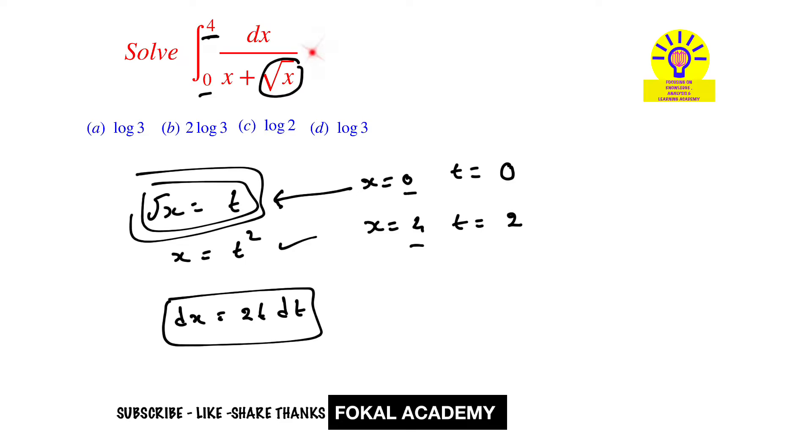Now rewrite the given integral as integral of, so whenever x equal to 0, t equal to 0. Whenever x equal to 4, t equal to 2. 1 by x equal to 1 by x means t square plus root x means t and dx means 2t dt.